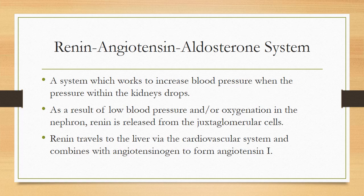The renin-angiotensin-aldosterone system is a system which works to increase blood pressure when the pressure within the kidneys drops as a result of lower blood pressure or low oxygenation in the nephron. Renin is released from the juxtaglomerular cells of the kidney. This renin travels to the liver via the cardiovascular system and combines with angiotensinogen to form angiotensin 1.